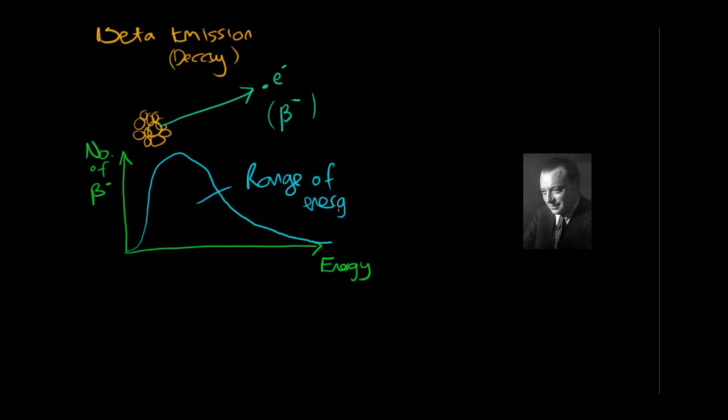And that baffled a lot of scientists because it seemed to go against the principle of conservation of energy. If you had a process where a nuclear decay happened inside here that gave out a specific amount of energy, then why has this beta particle got a range of kinetic energies as it's taken out of the nucleus? Why doesn't it just have two or three or maybe just one?